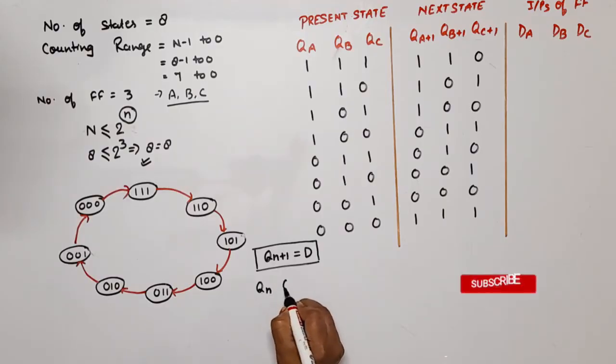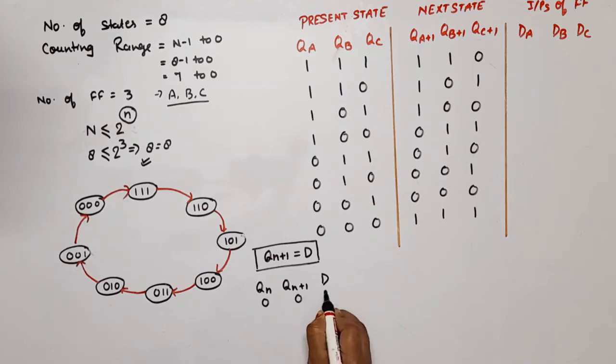Either you can use this formula or you can use the excitation table of D flip-flop. Excitation table of D flip-flop: Qn, Qn+1, and D. If both are 0, D will be 0. At 0-1, D will be 1. At 1-0, D will be 0. At 1-1, D will be 1. Means if you carefully observe, whatever Qn+1 value is, D value is the same.